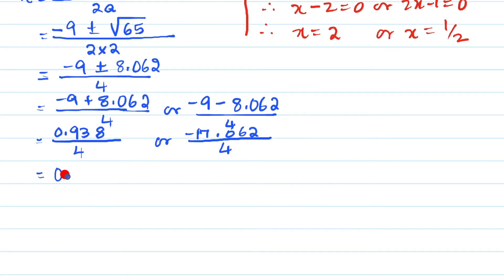9.062 upon 4. Now when you divide it will be 0.938 / 4 = 0.2345 or here it will be -17.062 / 4 = -4.2655.